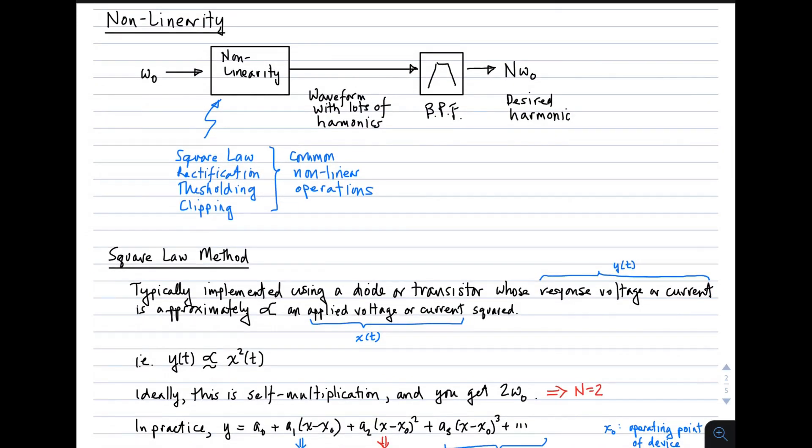The next broad class of methods involve non-linearity. And the idea is we apply a signal at a frequency omega-0. We subject it to some non-linearity. And possible non-linearities include square law, rectification, thresholding, and clipping. That results in a waveform with lots of harmonics. So that's the way that all these other frequencies get generated. We use a bandpass filter to pick off one of those frequencies, the one at the desired value of n, and that's how it works. So what I'm about to talk about is the various ways, the various non-linearities that you can use in such a scheme.